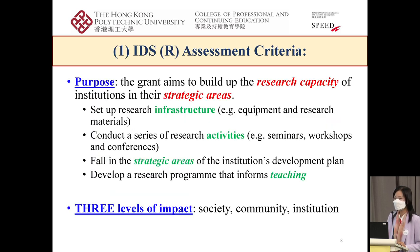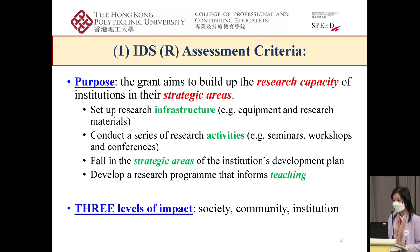What are the assessment criteria for the IDS infrastructure grant? The grant aims to build up the research capacity of institutions in strategic areas. The grant provides funding to set up research infrastructure, buy equipment, or research materials relevant to your research aim. We can also use the money to conduct a series of research activities like seminars, workshops, or conferences, creating a platform for scholars, industry, and government officials to share ideas and pursue research collaboration.